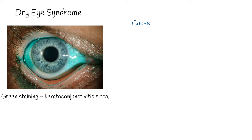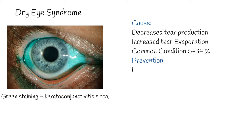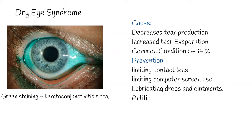Dry eye syndrome is caused by either decreased tear production or increased tear film evaporation. It is also known as keratoconjunctivitis sicca and is a common eye disease, affecting 5–34% of people depending on the population. Prevention can include limiting contact lens use, limiting computer screen use, and avoiding environmental conditions that worsen symptoms. Complications can be prevented by use of wetting and lubricating drops and ointments, for example natural tears.